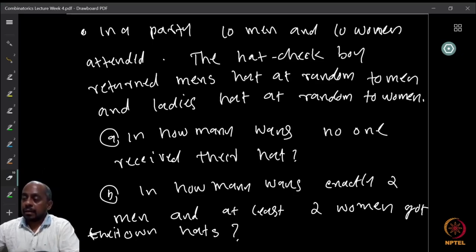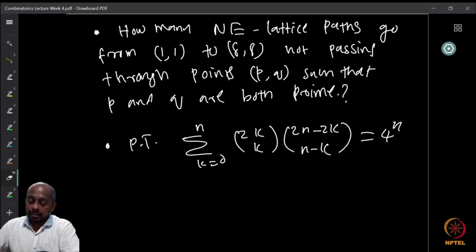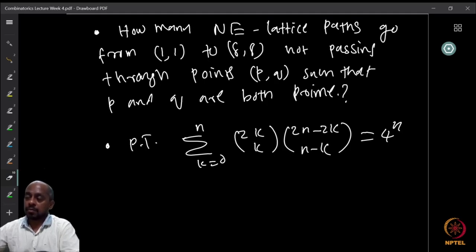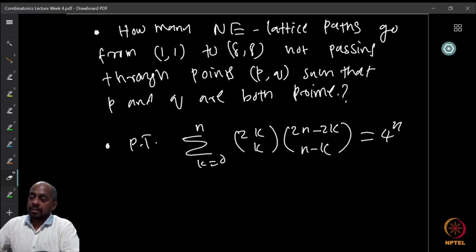Another question: how many northeast lattice paths go from (1,1) to (8,8) that do not pass through any point whose both coordinates are prime? Finally, prove that Σ(k=0 to n) C(2k,k)·C(2n−2k, n−k) = 4^n.